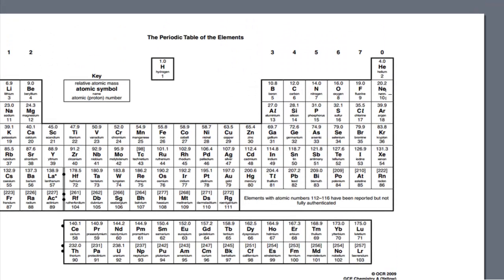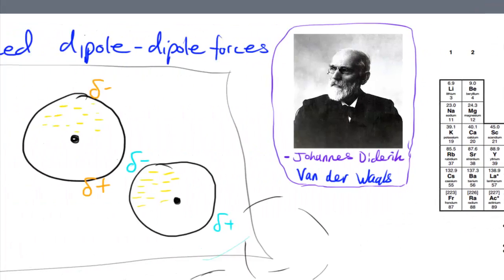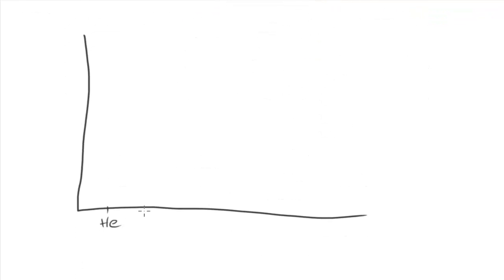If we consider a type of atom where the only real force acting between atoms is van der Waals forces — like the noble gases — we can draw a graph of the strength of van der Waals forces for different atoms. Going down the periodic table we have helium, neon, argon, krypton, xenon, and radon.